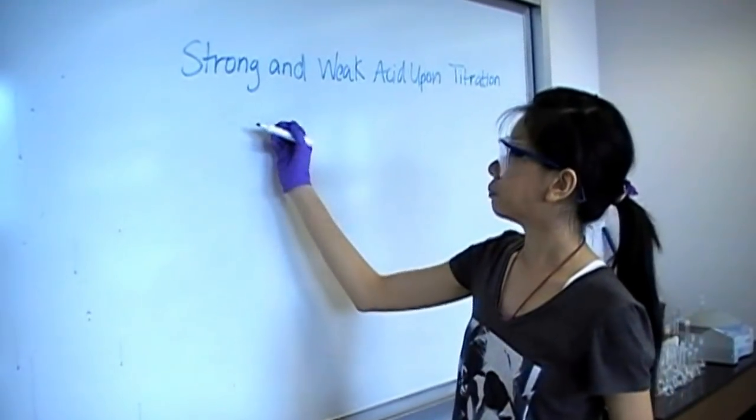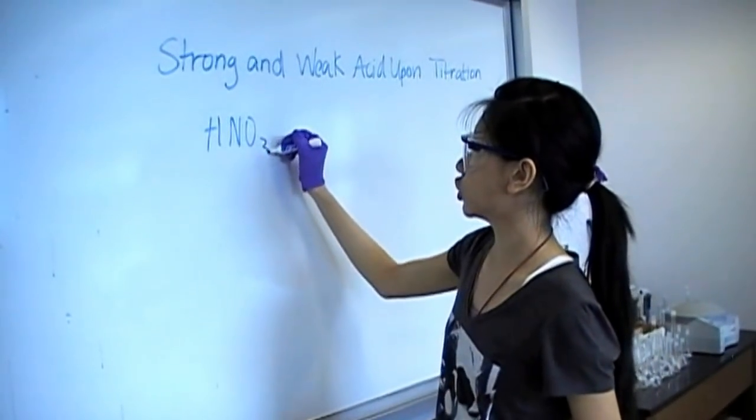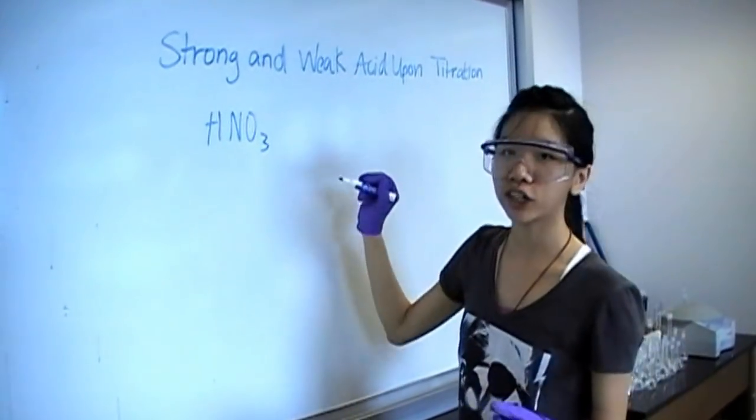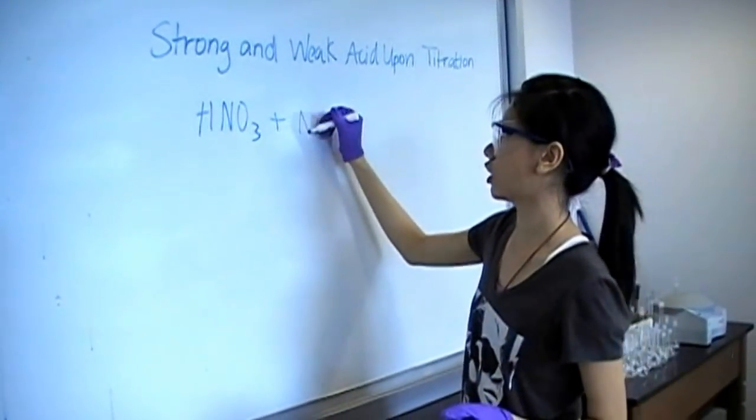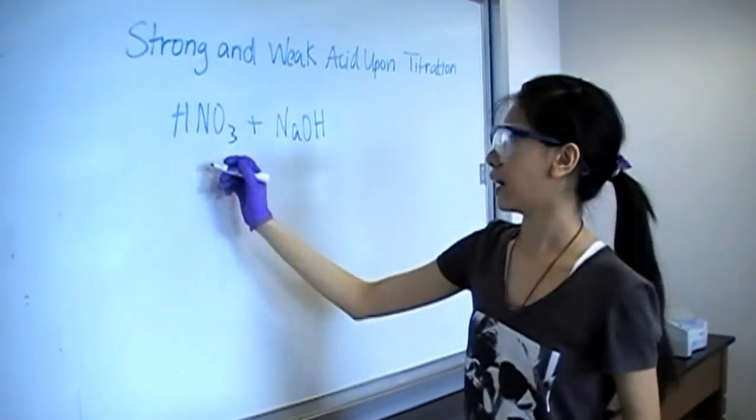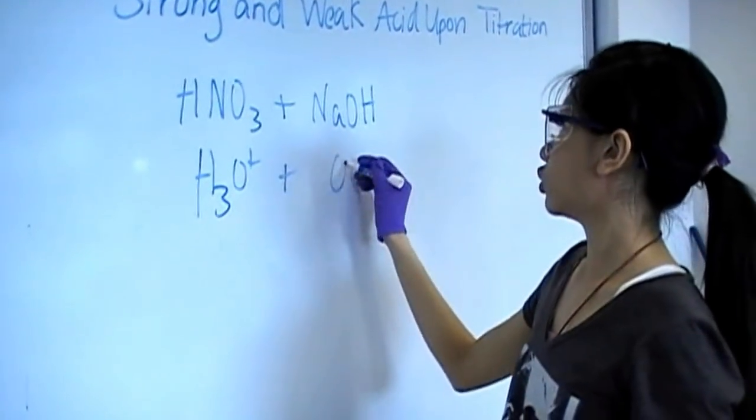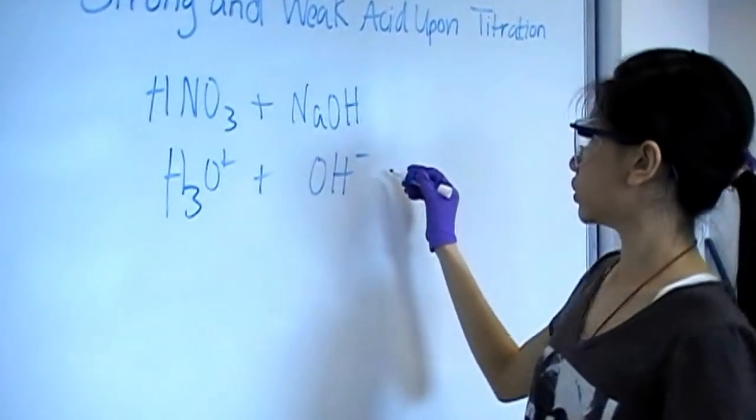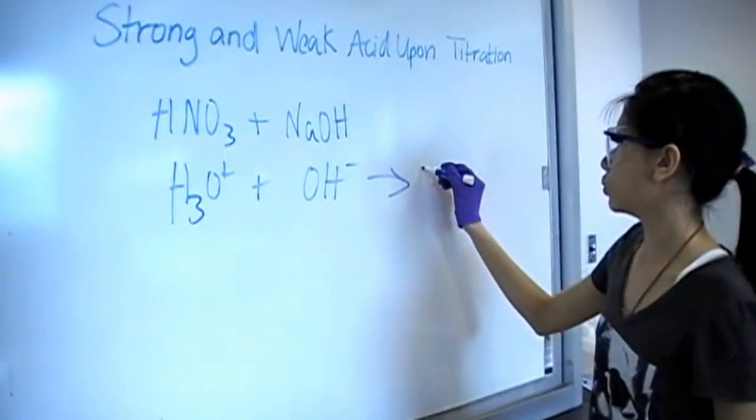We'll be using nitric acid as our strong acid and titrating that with sodium hydroxide, a strong base. We can also label this as H3O+ or hydronium plus hydroxide, which will completely react to form two water molecules.